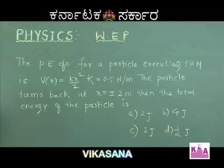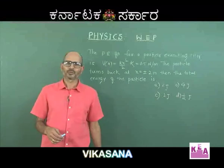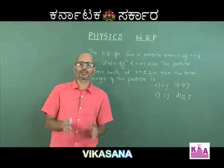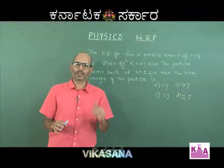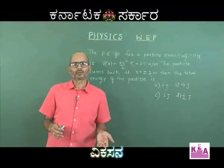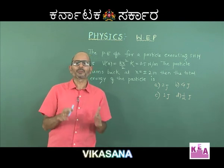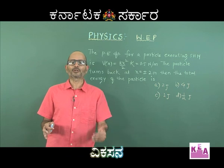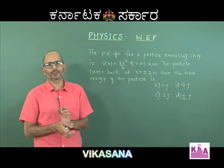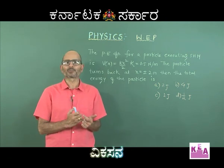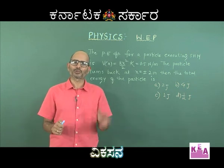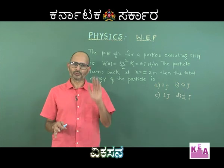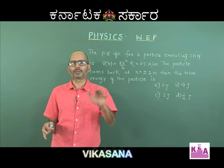The total energy of the particle is asked — potential energy plus kinetic energy. We first need to find where the mean position is and what the energy is there. At the mean position, the energy can be partially potential and partially kinetic. The potential energy at the mean position need not always be 0, because potential energy is always a matter of choice of frame of reference — it could be 0, negative, or positive.